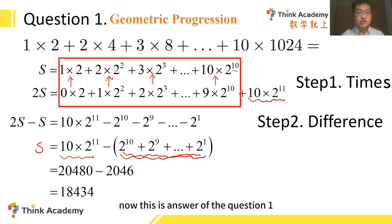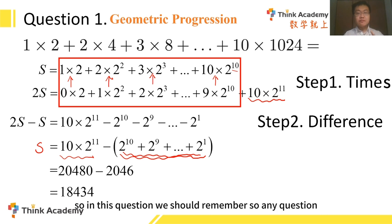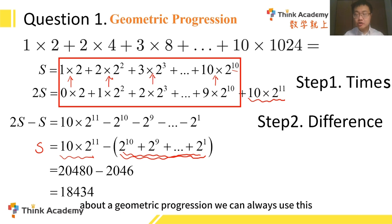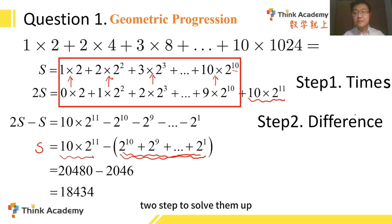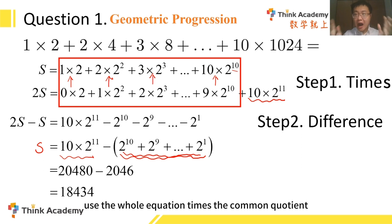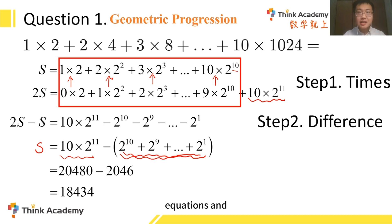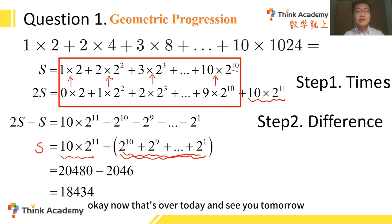So in this question, we should remember that for any question about a geometric progression, we can always use these two steps to solve them: the first step is to multiply the whole equation by the common quotient, and the second step is to find the difference of the two equations to get the final answer. That's all for today — see you tomorrow.